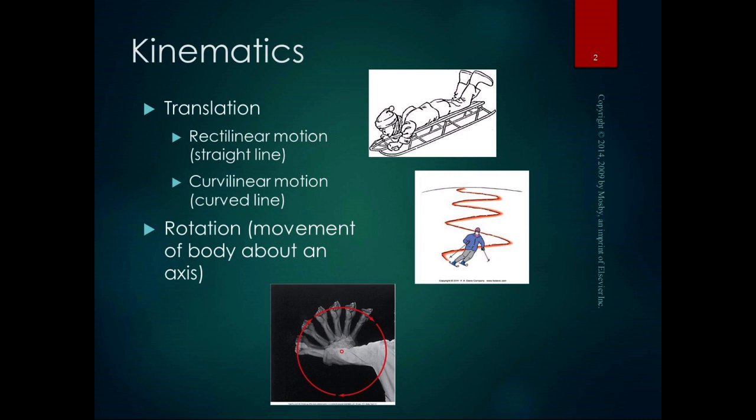Translation and rotation are the two main types of motion. Translation is where all points in the body move together at the same time. There are two types: rectilinear motion, which is motion in a straight line, and curvilinear motion, which is motion in a curved line. In the pictures, the little kid on the sled going straight down the hill is rectilinear motion, and the skier making turns as they go down is curvilinear motion.